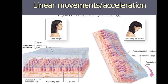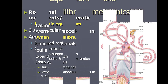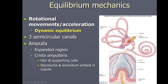Any movement of that membrane will bend the stereocilia and kinocilium on the hair cells and generate action potentials so your brain understands what's happening. The semicircular canals are responsible for detecting rotational movements — called dynamic equilibrium. There are three semicircular canals strategically placed in different planes to detect rotation in all directions. At the base of each there's an expanded region called the ampulla.